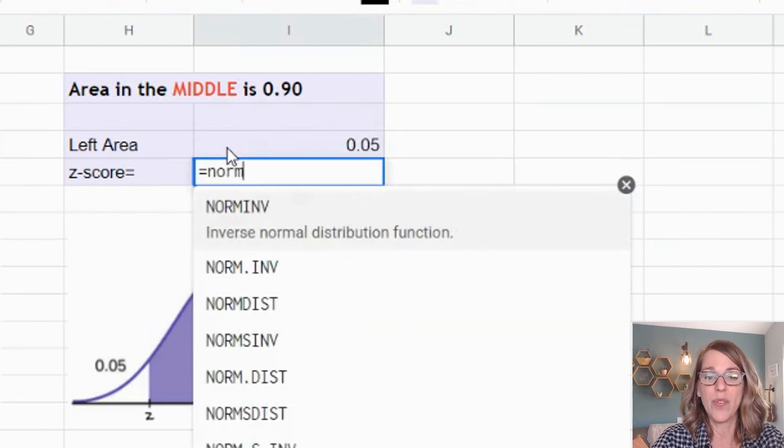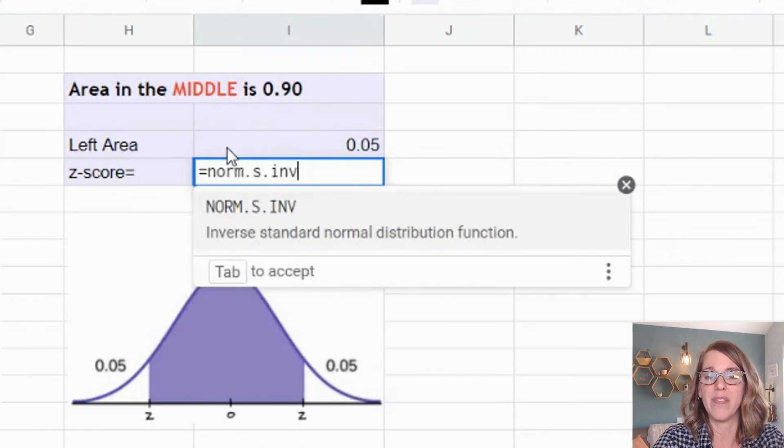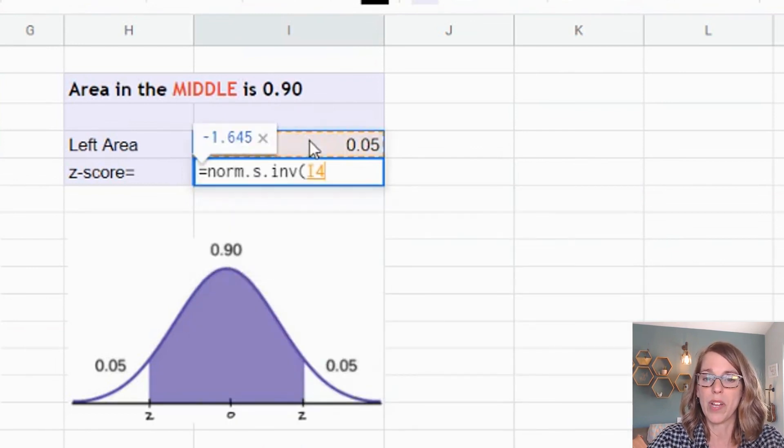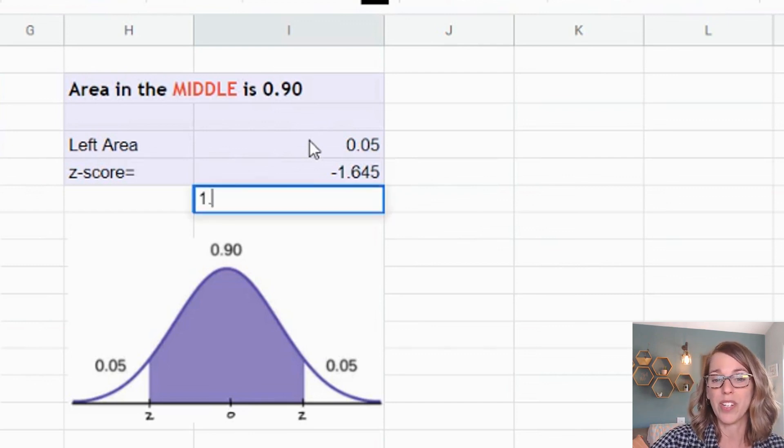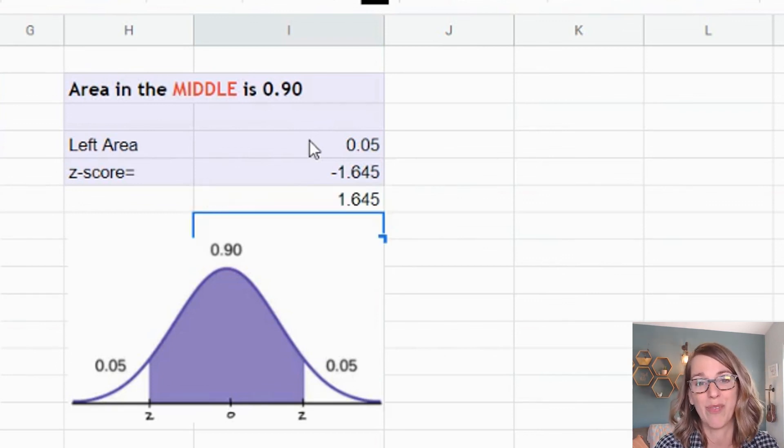This makes it really easy to find that z-score. So I'm going to say equals NORM.S.INV. I'm going to grab that 0.05. Now I could do the same thing and do my 1 minus 0.05, and I'd have an area all the way to the left of that second z-score of 0.95. Or I can just use symmetry and know that my second z-score is going to be the same value, but positive 1.645.